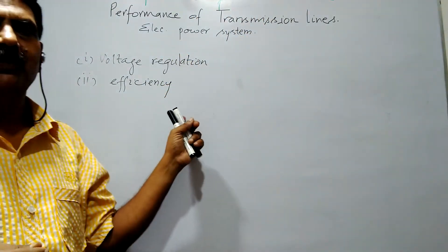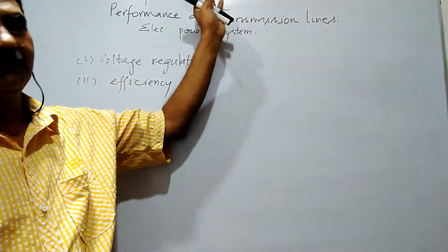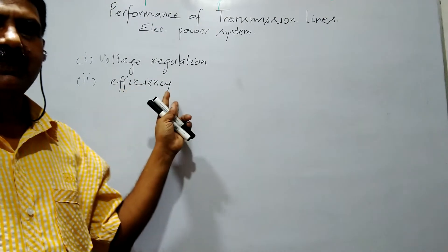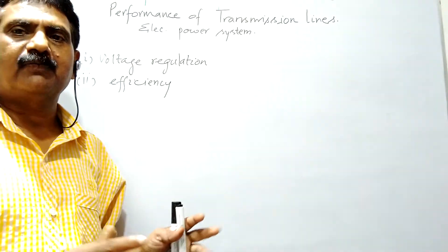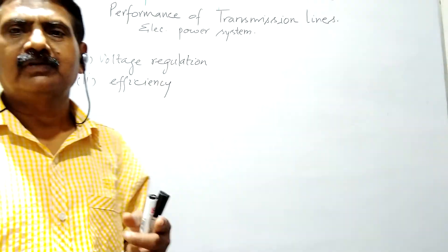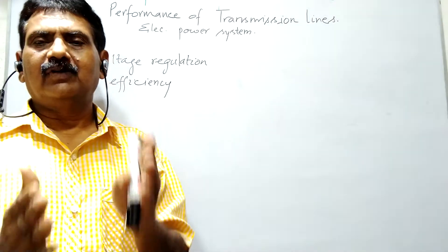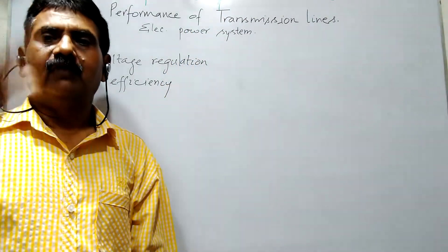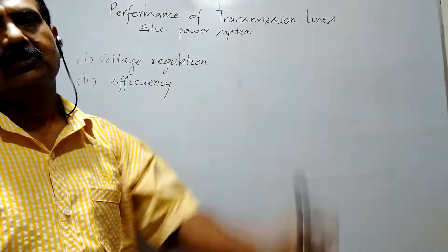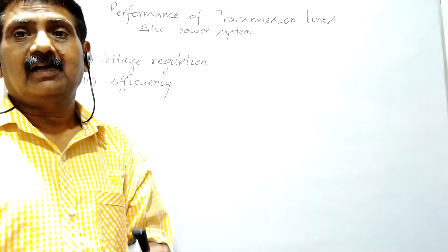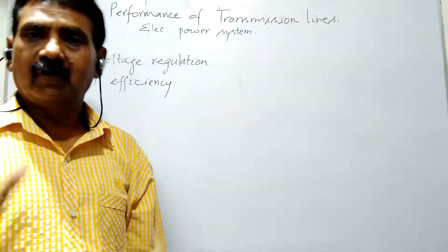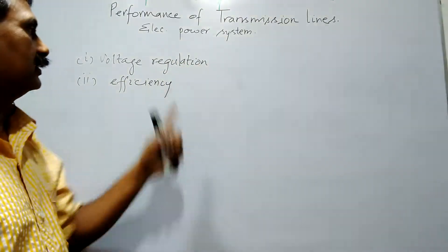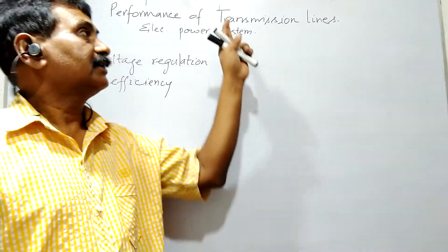Obviously power losses are related with efficiency. So we have understood the performance of transmission line. If efficiency is more, then the performance is very good. If voltage regulation is good — if voltage fluctuates very little — then we say the performance is very good. If voltage fluctuation is very high, or power loss is high, then the performance is not good.